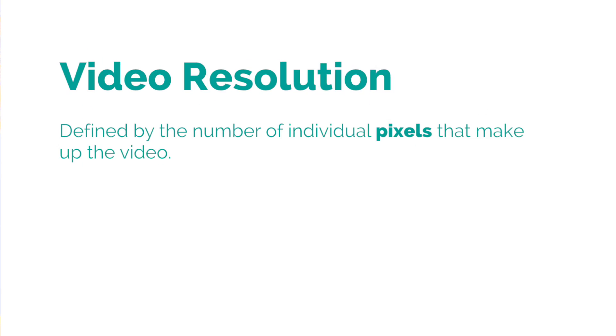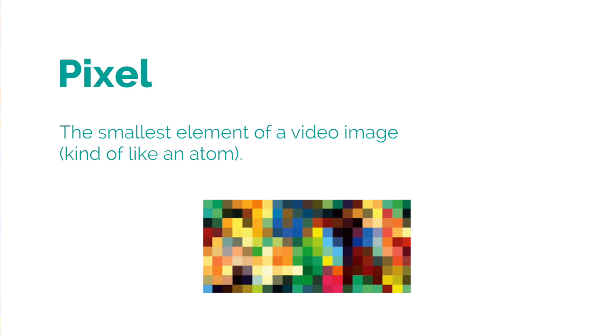So what 4K describes is what's known as a video resolution. A video resolution is defined by the number of pixels that are in the image. A pixel is the smallest unit that makes up a video — a bunch of these little guys make up all of this. Crop in and I'll show you what I mean. I hope that was beautiful.